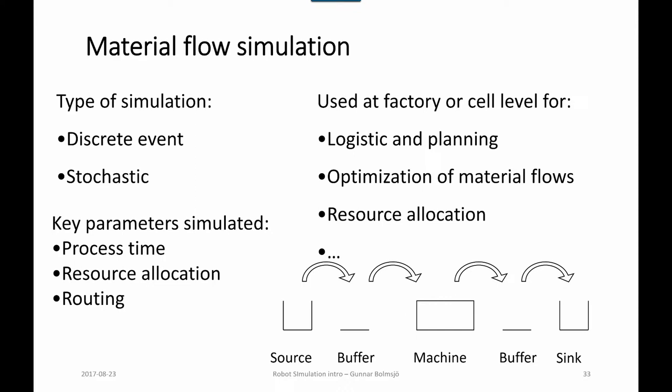Quite often for one machine, we have a source where objects are created and put into a buffer. The buffer can have availability for one or more objects, and these are moved on to the machine where they are processed under a certain time, which could vary depending on stochastic variations. Then out to the buffer again, which could hold one or more items, and then to the sink where it just disappears.